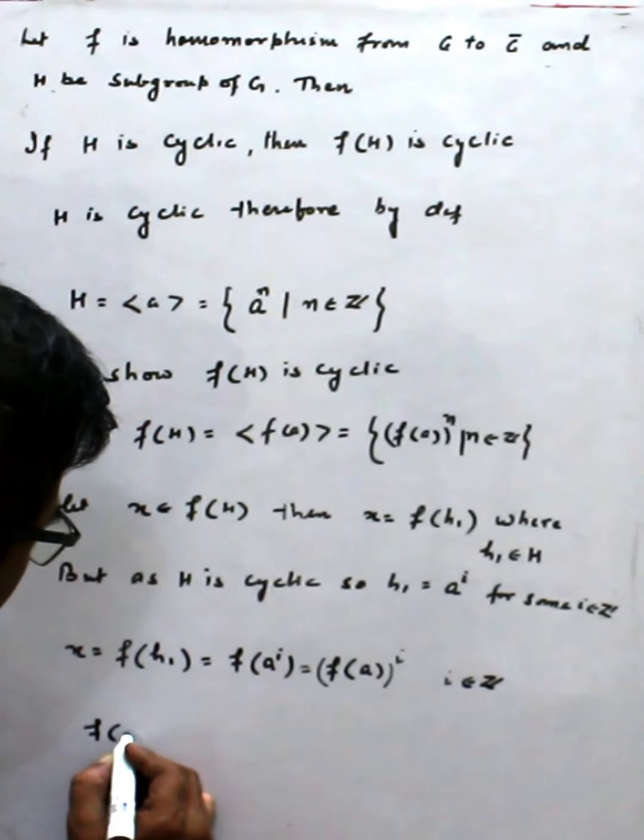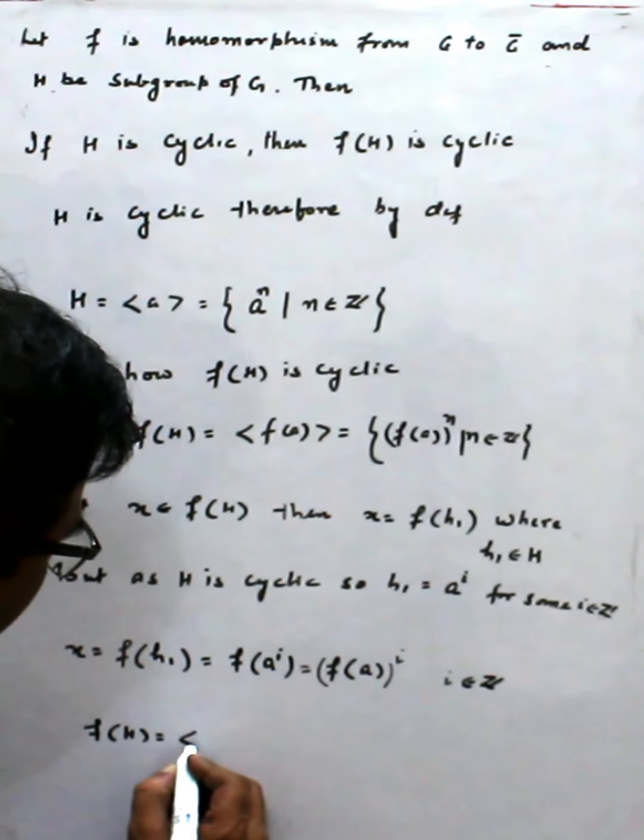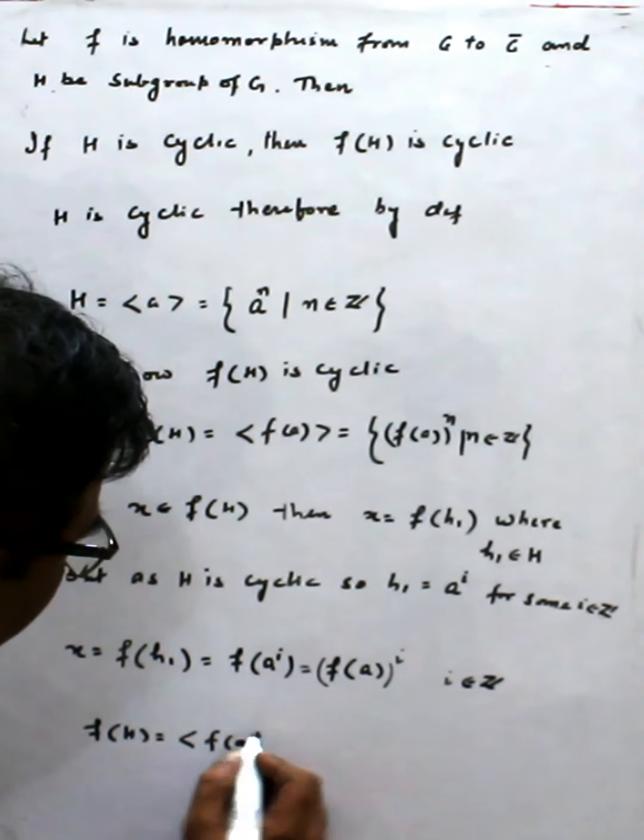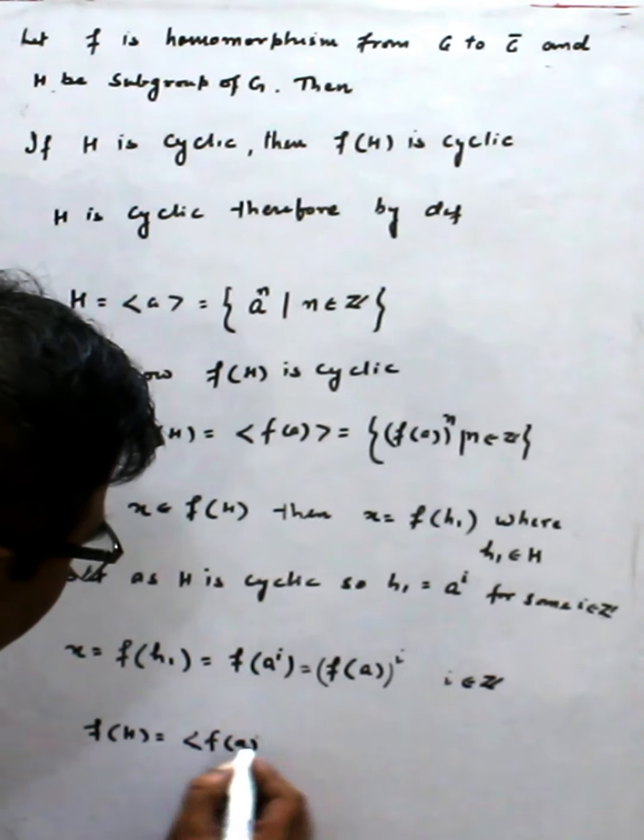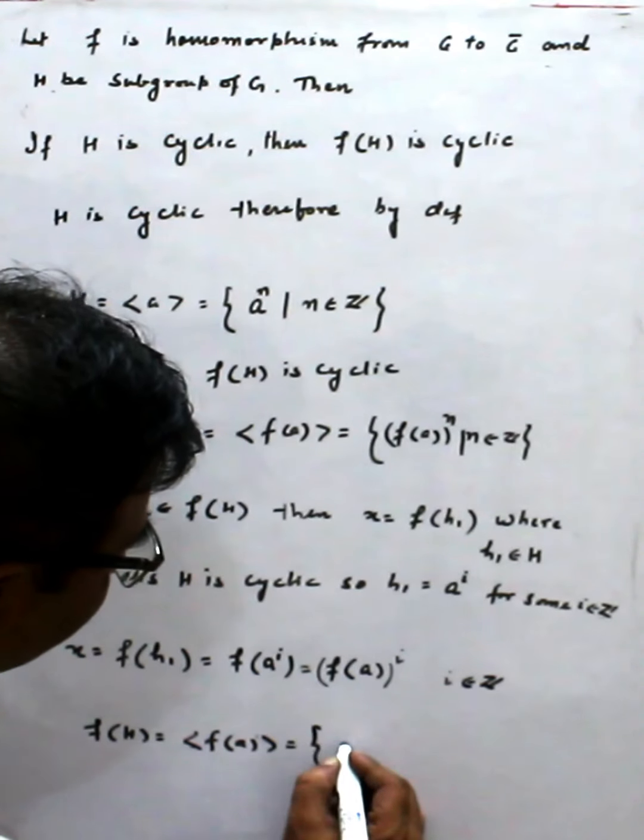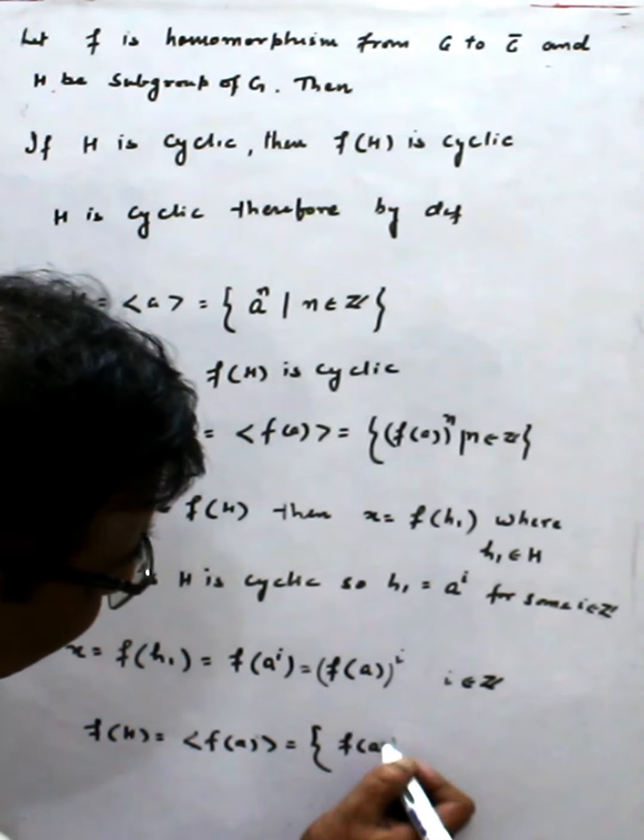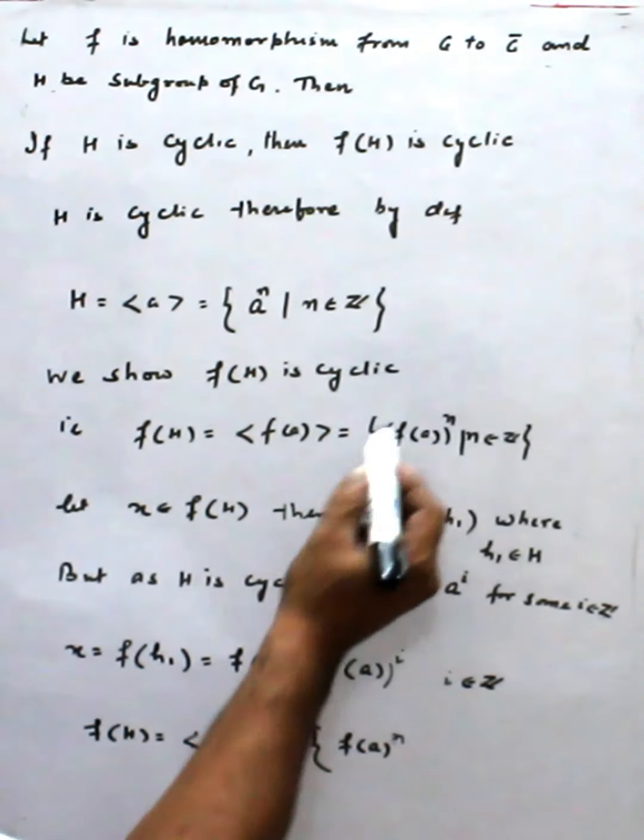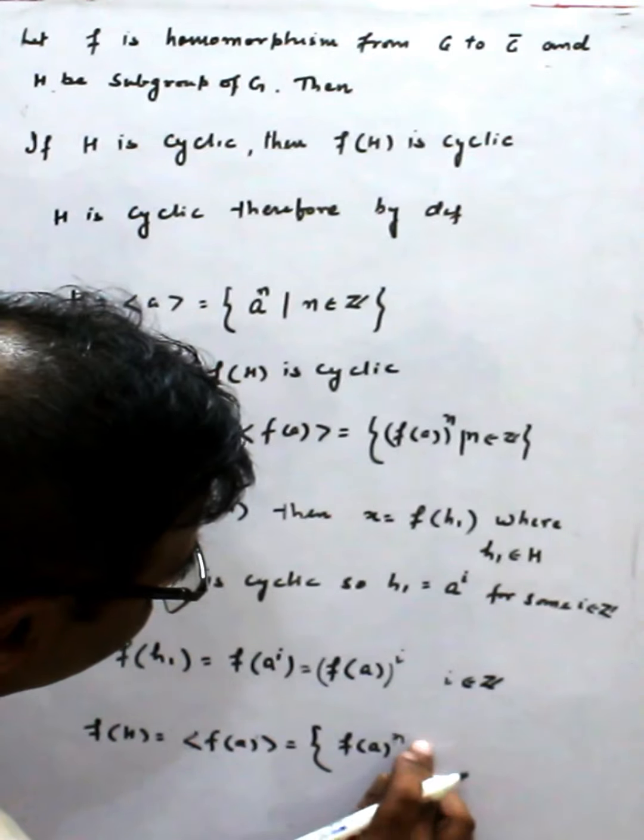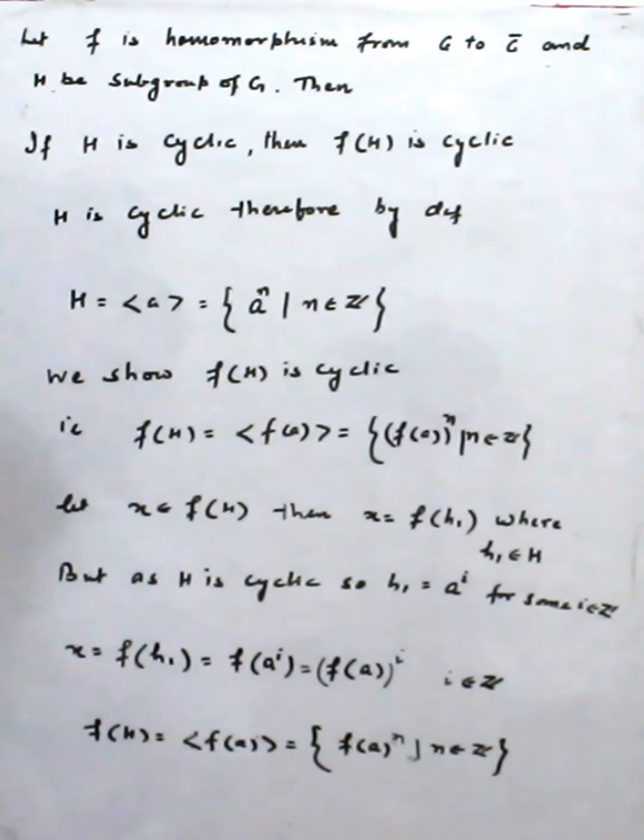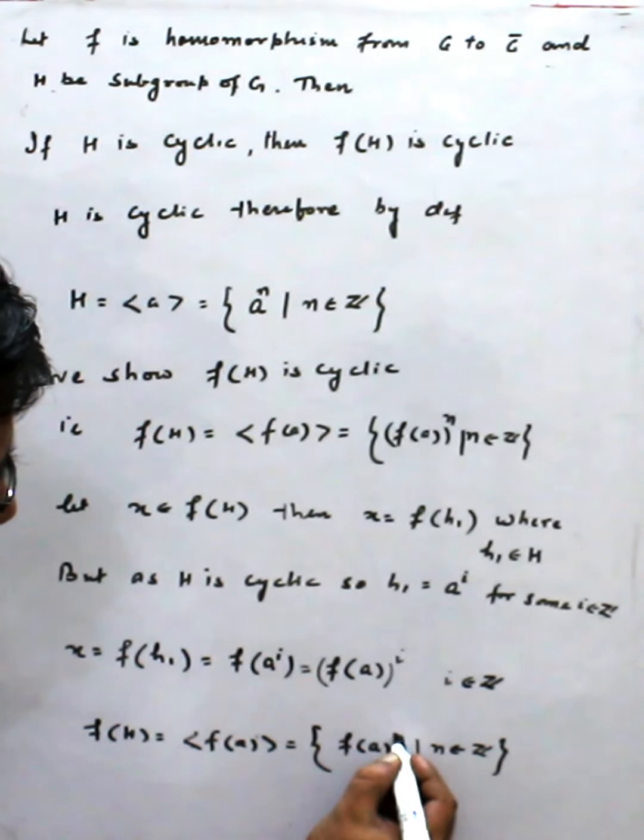F(H) can be written as F(a)^i. Or simply, I can write F(a)^n, taking this value n, no problem. This n belong to Z. So F(H) is cyclic because this is the definition of cyclic group.